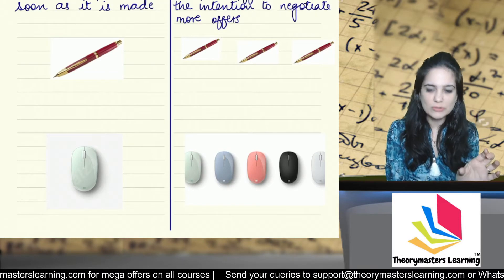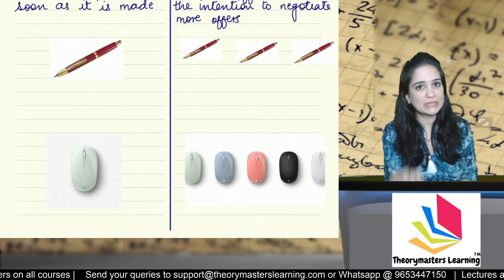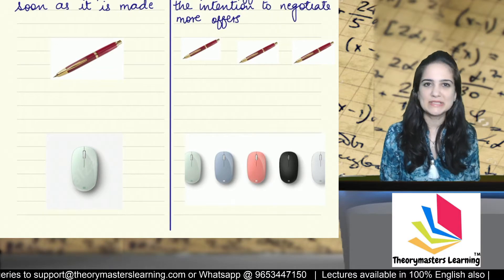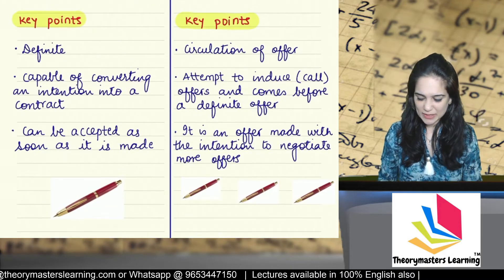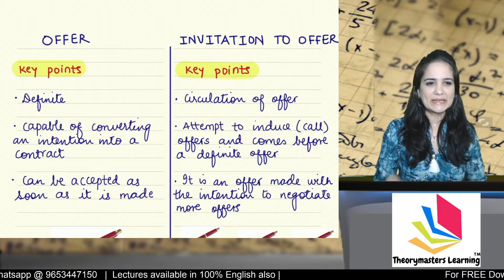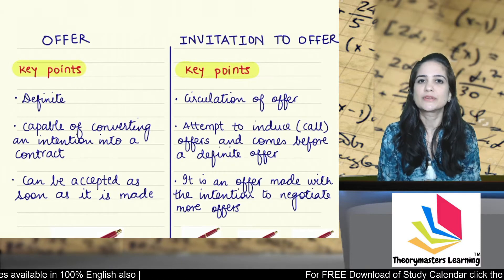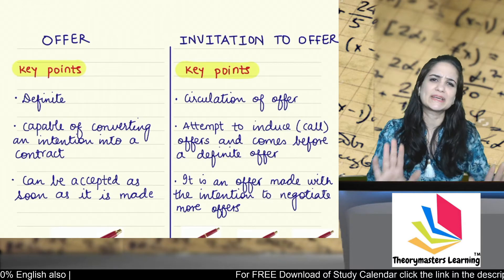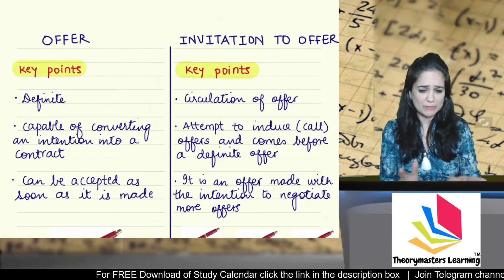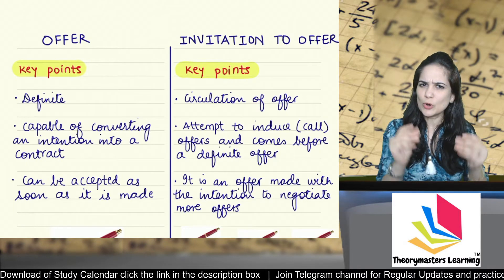Now let's read the key points. What is offer? Offer is very definite. It is very clear. It can be converted into a contract immediately — you can either accept or reject as soon as it is made. If you have accepted it, then a contract is formed. If you say no, I don't want to buy this pen or this mouse, then the offer is rejected and no contract is formed.